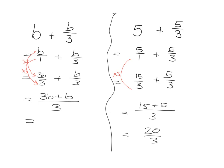What you've got is three b's and another b. These are like terms so you can say you've got three b's and another b, so you've got four b's. Your answer is 4b over 3 and you're finished.